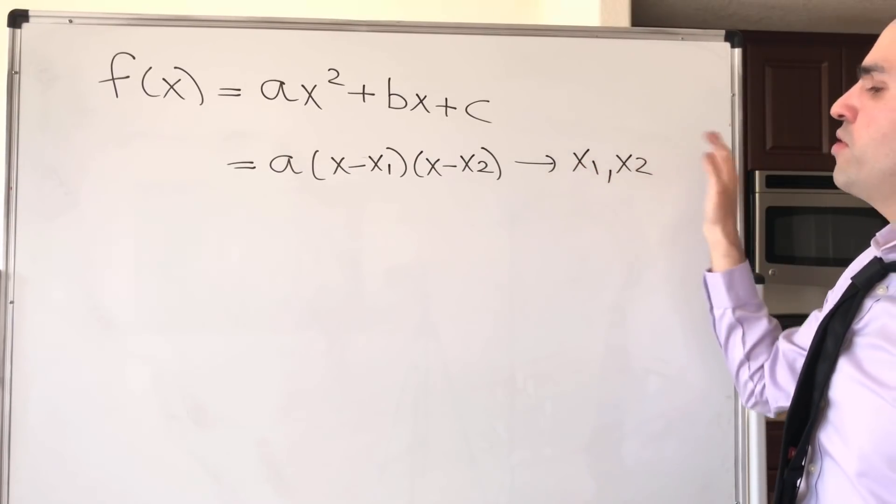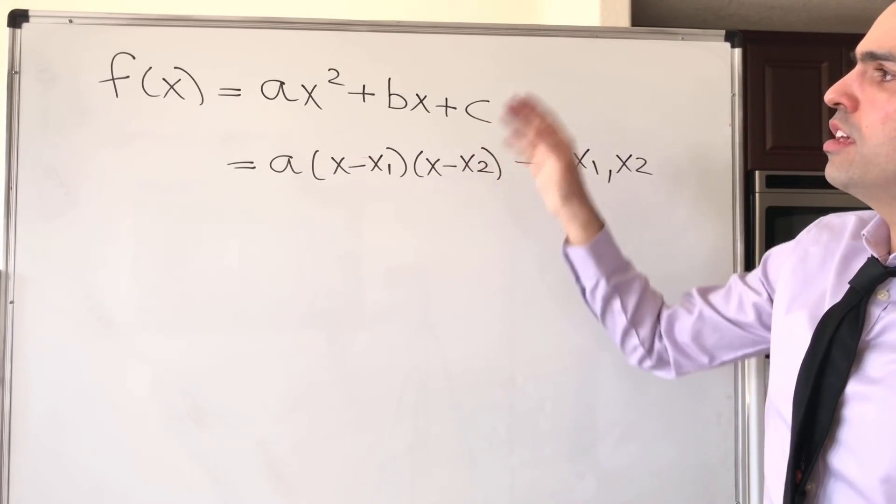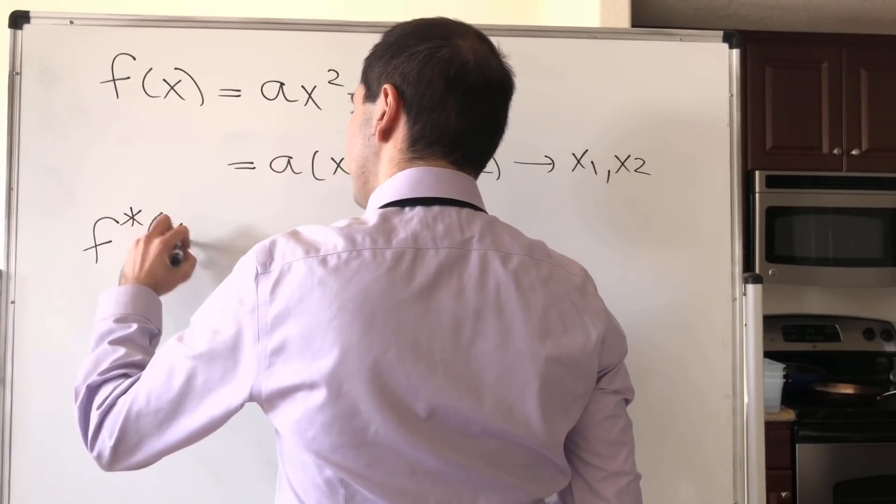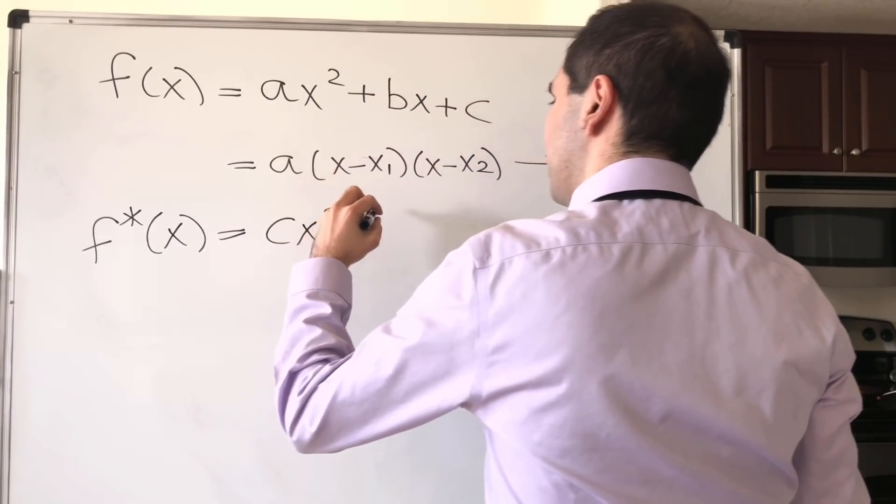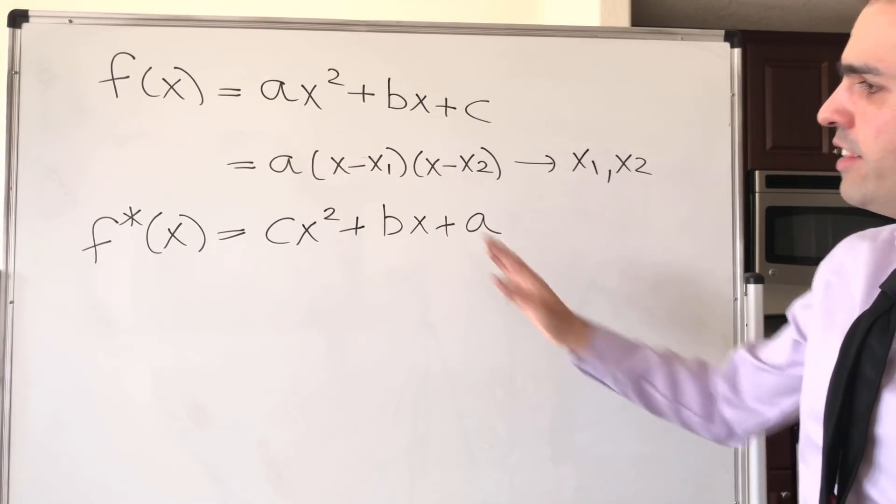So in other words, suppose x1 and x2 are the roots, then you can factor it as follows. And then now consider the reciprocal polynomial. So f star, which is just cx squared plus bx plus a.